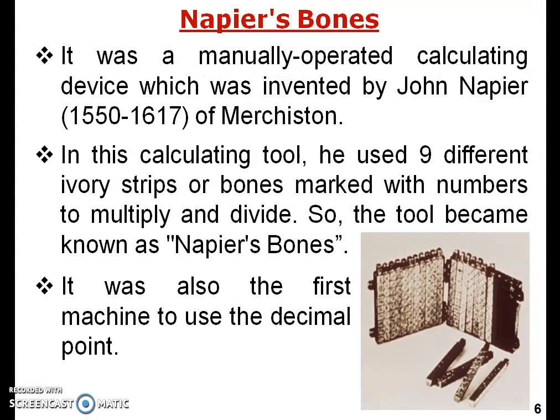Napier Bones was a manually operated calculating device invented by John Napier between 1550 and 1617. In this calculating tool, he used nine different ivory strips or bones marked with numbers to multiply and divide. It was a small kind of arithmetic calculator and was also the first machine to use decimal points.